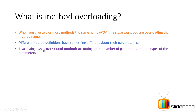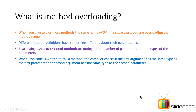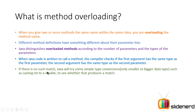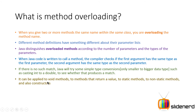Java distinguishes overloaded methods by the number and type of parameters. When you call a method, the compiler checks whether each argument type matches the corresponding parameter type. If no exact match is found, Java attempts automatic type conversion — promoting a smaller type like int up to a larger type like double. You can also overload void methods, methods that return a value, static methods, non-static methods, and even constructors.